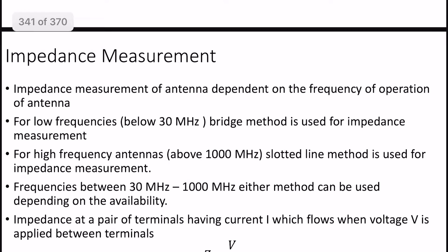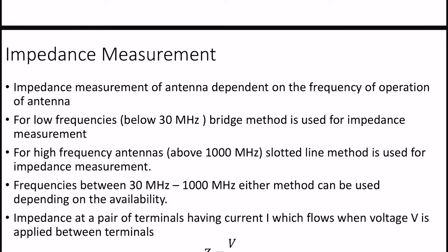Impedance measurement is frequency dependent. It depends on the frequency of operation. For low frequency — we have to use a method up to approximately 30 MHz — we have to use the bridge method. This is a high frequency range.